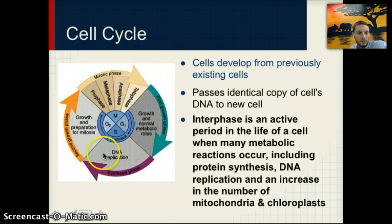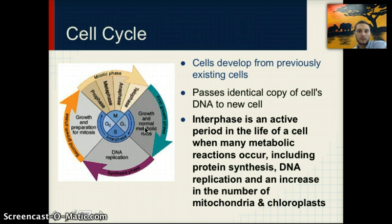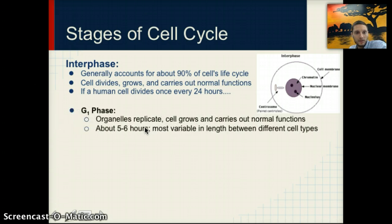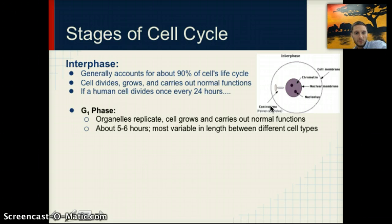Interphase is an active period in the life of the cell — it's when the cell performs its functions, including protein synthesis, DNA replication, and metabolic reactions. There is also an increase in the number of organelles so the cell can divide. Interphase generally accounts for about 90% of the cell's life cycle. If a human cell divided once every 24 hours, about five to six of those hours would be spent in G1 phase, during which organelles replicate and the cell grows and carries out its normal functions.